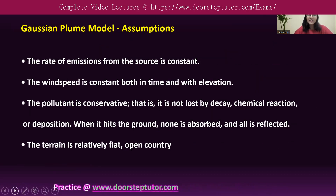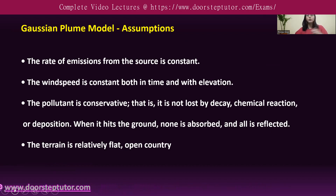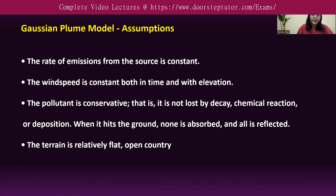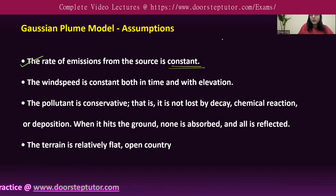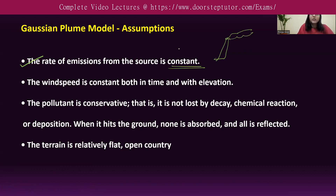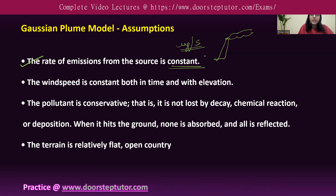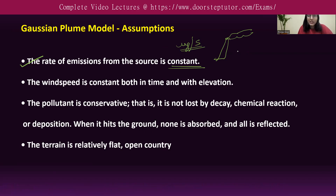Before understanding how this model works, we need to take into account certain assumptions. The first assumption is that the rate of emissions from the source is constant. We assume that the rate at which the pollutant comes out of the chimney — for example, how many micrograms of pollutant are emitted per second — remains constant throughout, and does not vary over time.